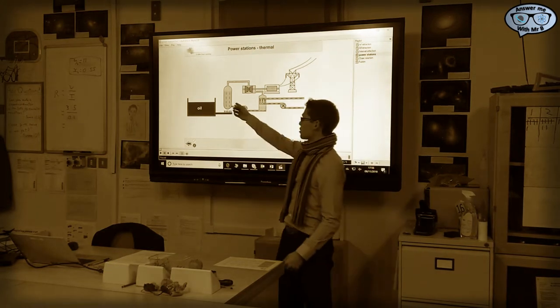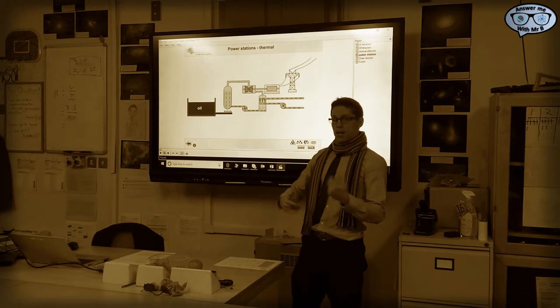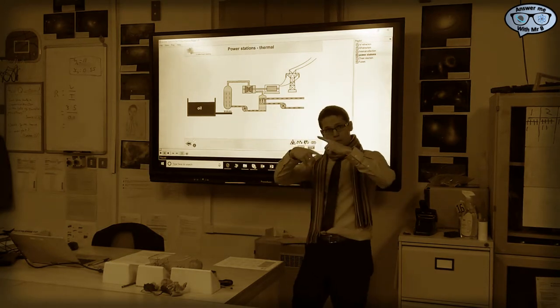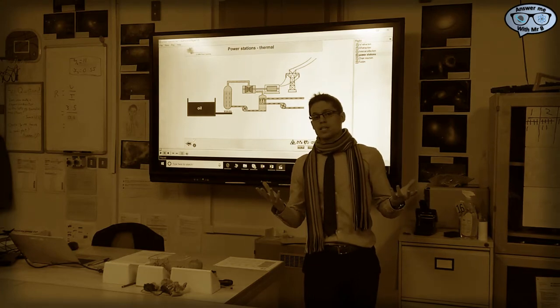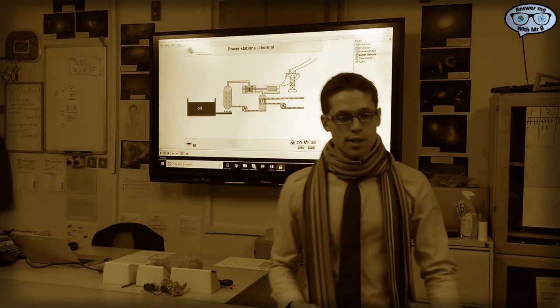That heats up a reservoir of water, turning it into steam. The steam then drives the blades of a turbine round, and if you connect that to a generator you get electricity.